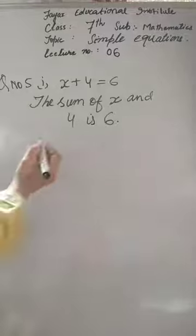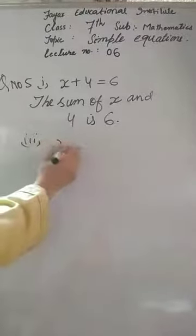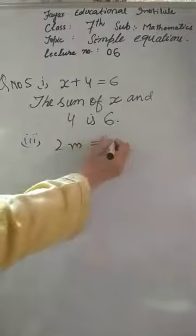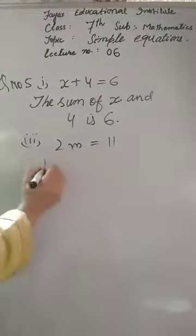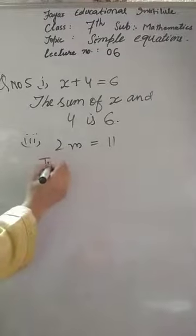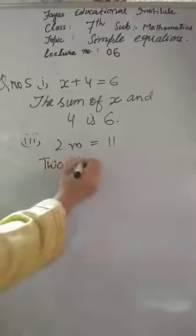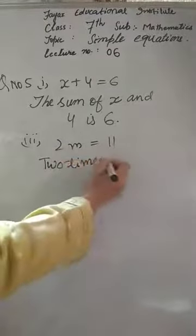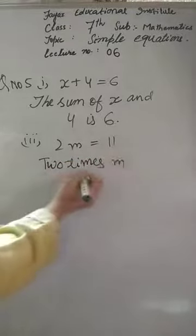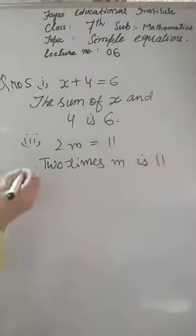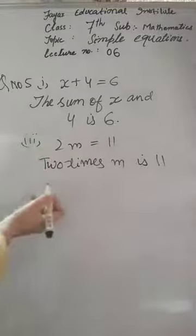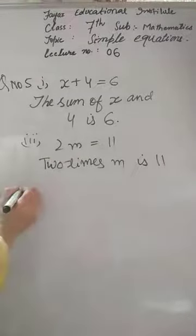Similarly, let's see the third part: 2m is equal to 11. So we write: 2 times m is 11. This is how we change an equation into a statement.